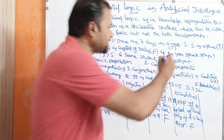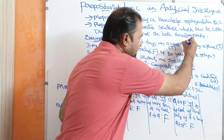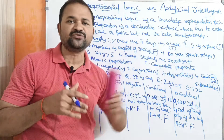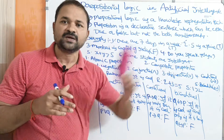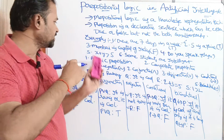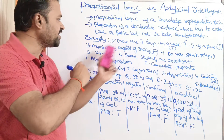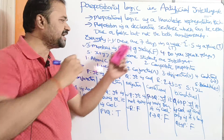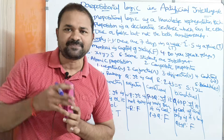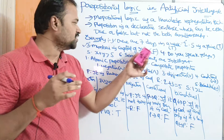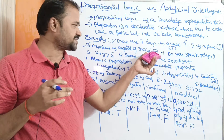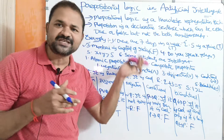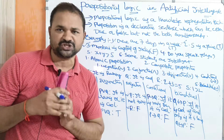'Five is a prime number.' Yes, five is a prime number, so the truth value is true. So it is also a proposition. Next, 'Mumbai is capital of India.' No, Delhi is capital of India. So it is false; the truth value is false. So this is also a proposition.